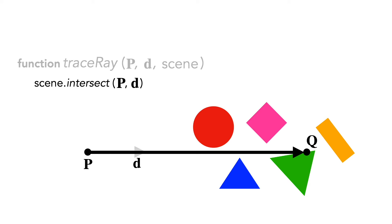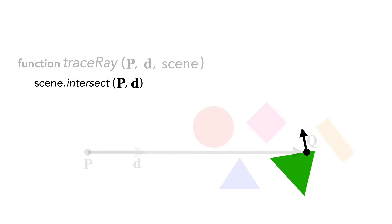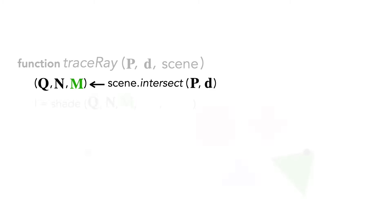In addition to the point of intersection we'll need the surface normal and the material properties. The intersect function will return all three of these quantities. Next we will compute the intensity or color at that point. This is known as shading and computed by the shade function.